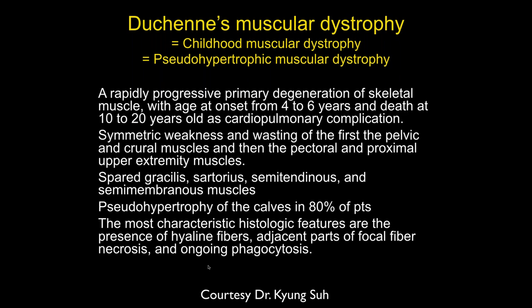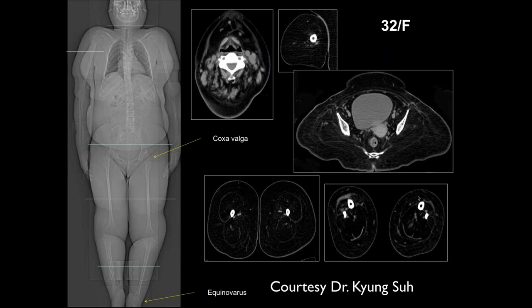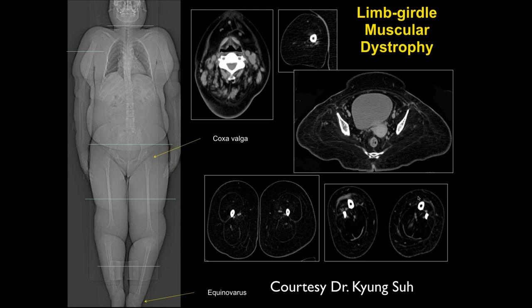Duchenne's muscular dystrophy, also called childhood muscular dystrophy, is certainly one of the most common. It typically presents at four to six years of age, usually with death by 10 to 20 years, and you get symmetric wasting. In a 32-year-old female, there's virtually no muscular mass — almost all fatty replacement. This is limb girdle muscular dystrophy.